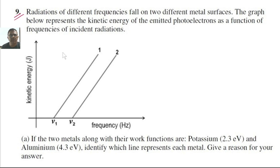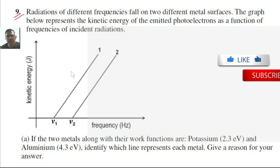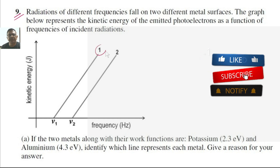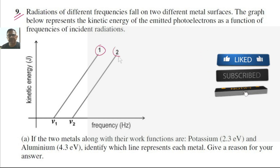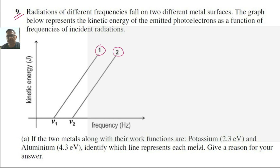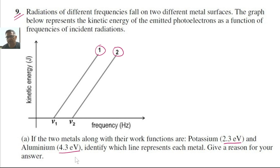In question number 9, we are given a kinetic energy versus frequency graph for two different metals. The work function of the two metals happens to be 2.3 electron volt and 4.3 electron volt. We are supposed to identify the graph and the corresponding metal.